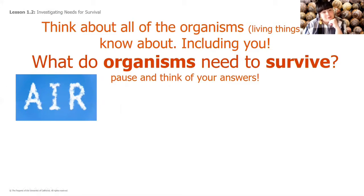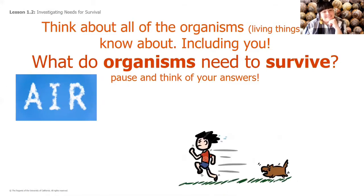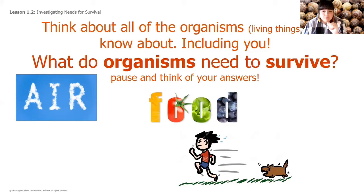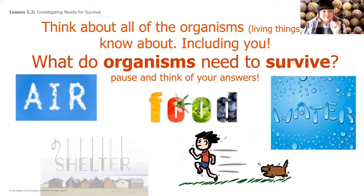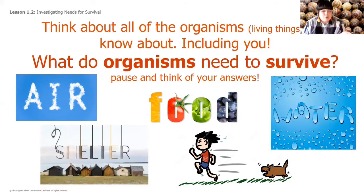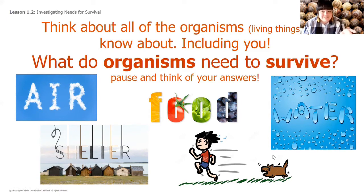If you said air, you'd be correct. Avoiding predators — we don't usually have that problem, but if I were getting chased by a dog on the street I'd say that's a similar problem. Food, water, and shelter — those are all really important no matter what environment you're living in. So we really need to think about whether the snails are getting all of these things and what is happening in this environment.